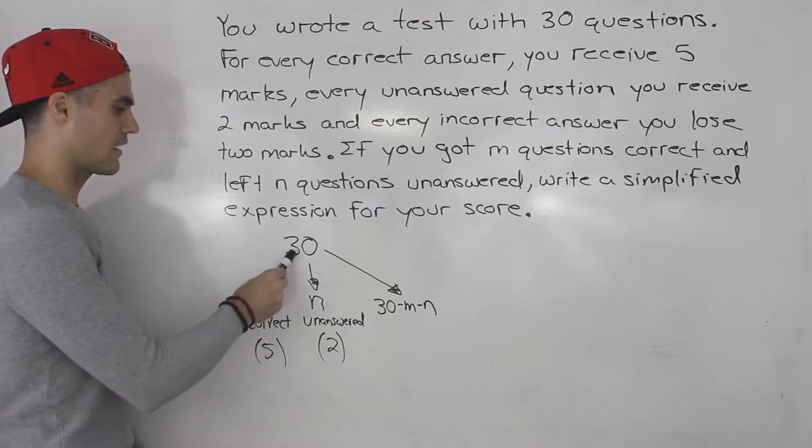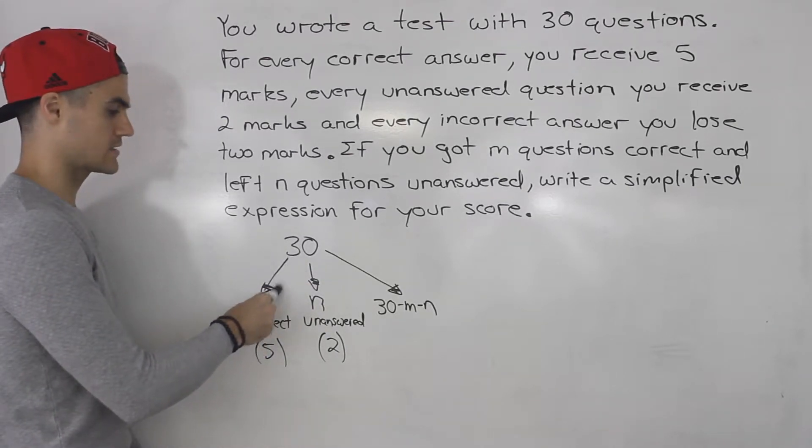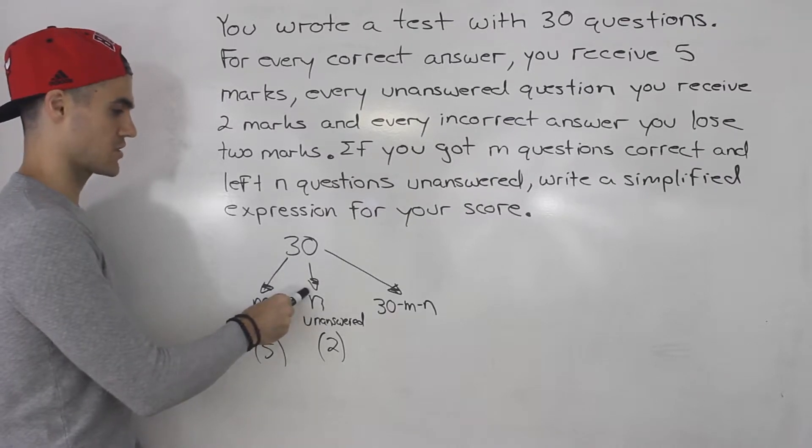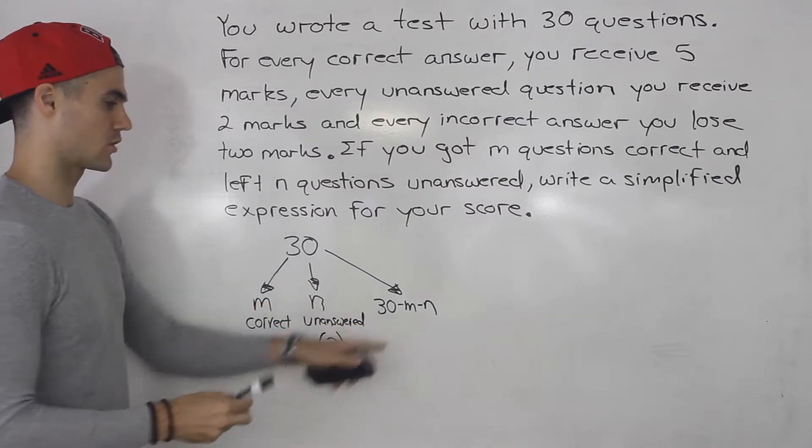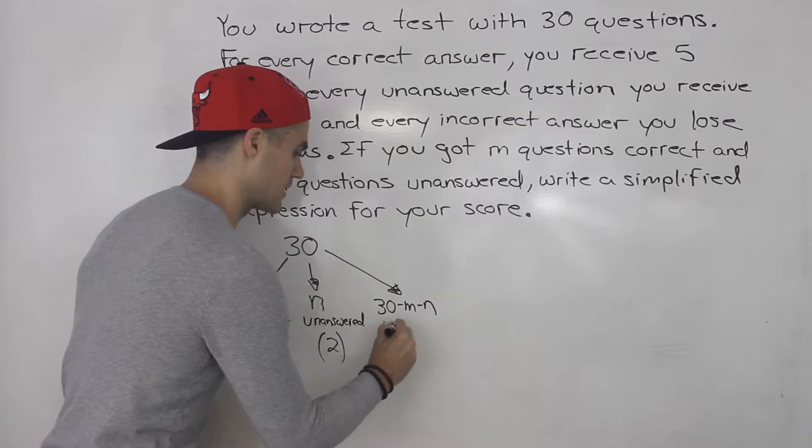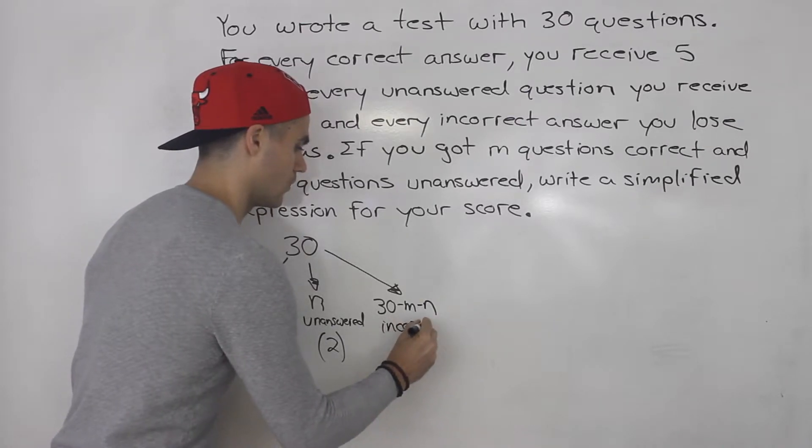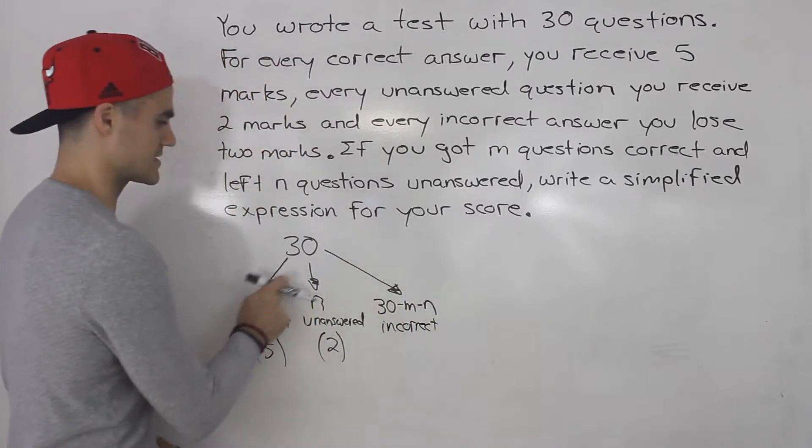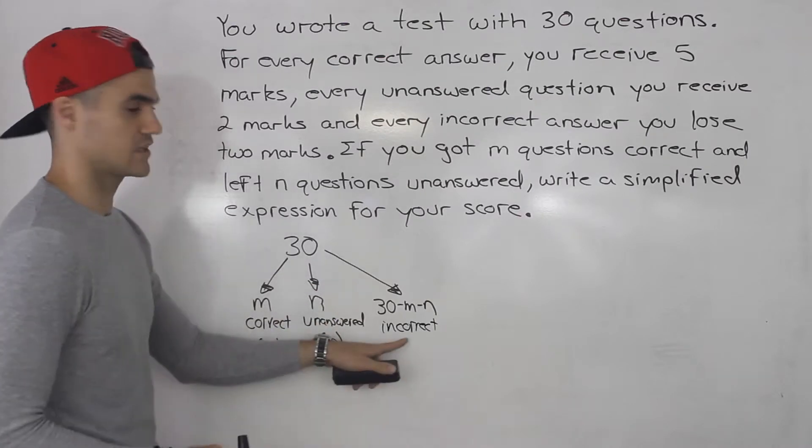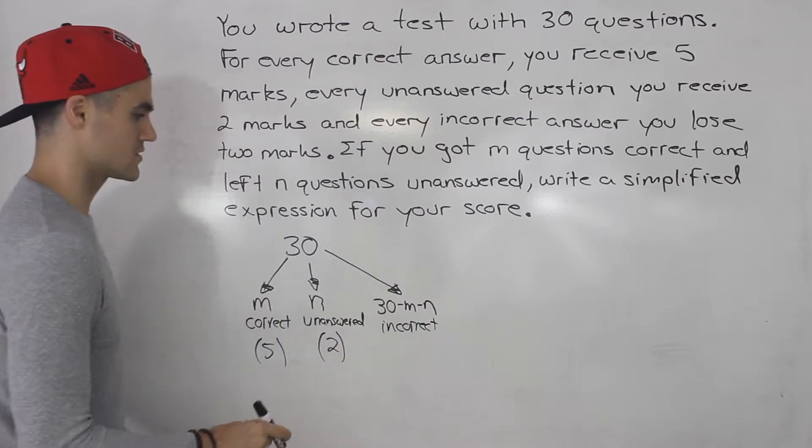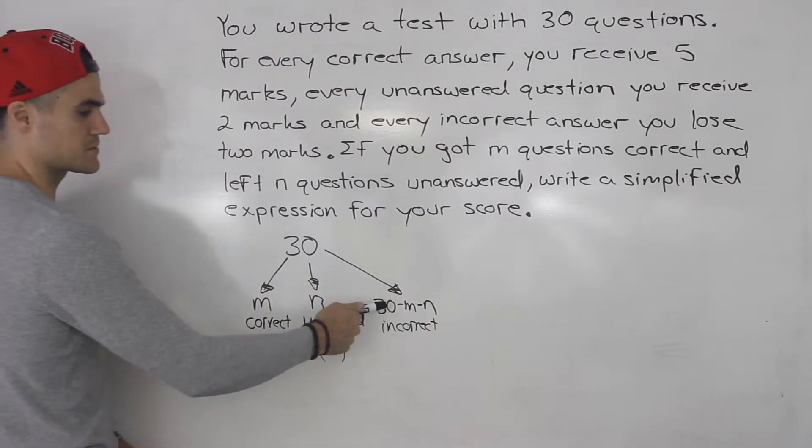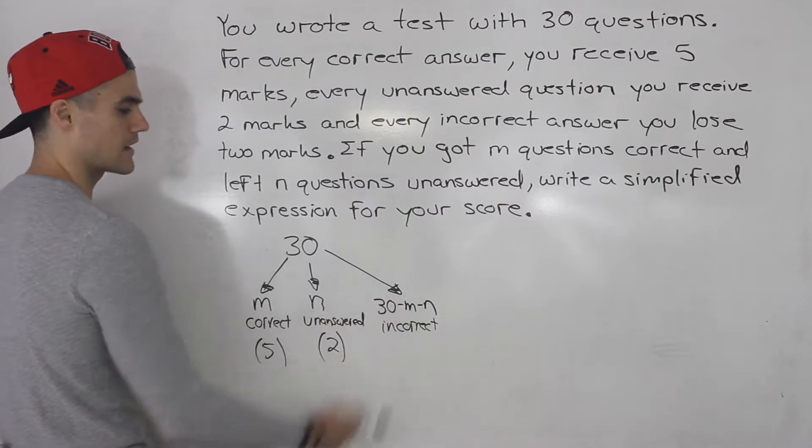So let's say for example that out of the 30 questions you got 10 correct, 5 you left unanswered. Well how many questions are going to be incorrect? It's going to be 30 minus 10 minus 5. So 15 will be incorrect. So the number of incorrect questions will always be 30 minus M minus N.